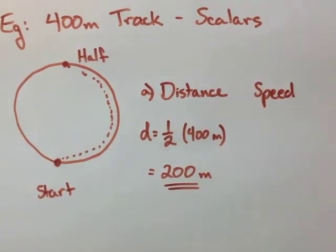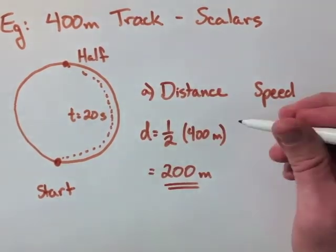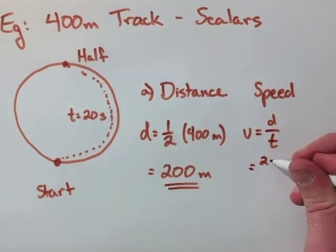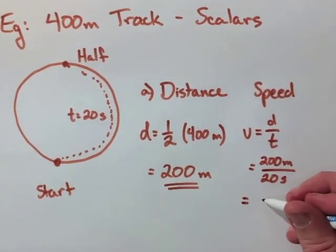Next, we're going to look at speed. With speed, we have to associate some time. Let's say 20 seconds. So the speed here is equal to distance over time. So now we have 200 over 20, which gives us 10 meters per second.